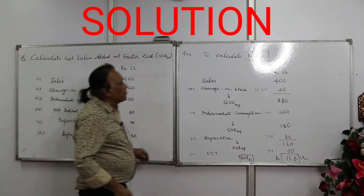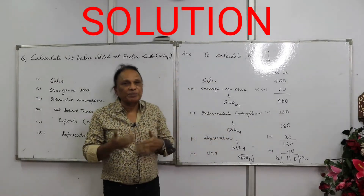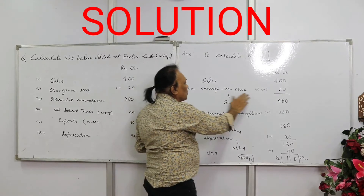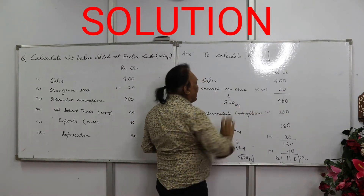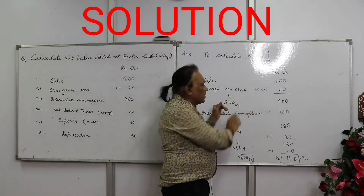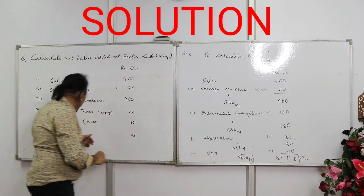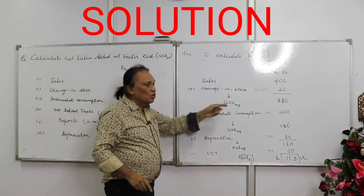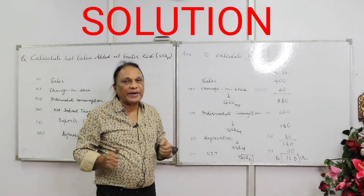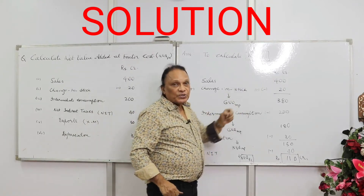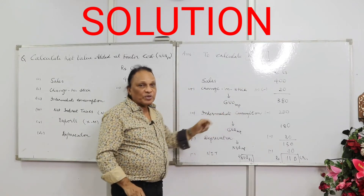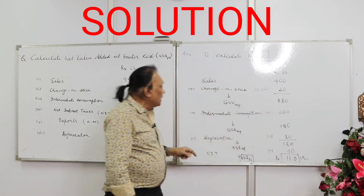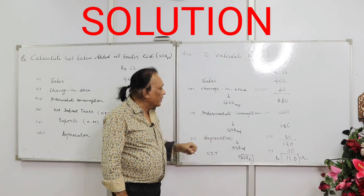I prefer you always do this vertically so you never get confused. Step one: sales = 400. Add change in stock = minus 20, so 400 minus 20 = 380. That gives you gross value of output at market price. Note: we don't take exports separately here because exports are already included in the sales figure. Step two: from GVO at MP, subtract intermediate consumption of 200. So 380 minus 200 = 180 — that is gross value added at market price.